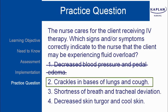Crackles in the bases of lungs and cough is correct. Pulmonary symptoms of fluid volume overload include crackles, shortness of breath, and frothy sputum. Other symptoms might be distended jugular neck veins and increased blood pressure. Shortness of breath and tracheal deviation are signs and symptoms of a collapsed lung. Decreased skin turgor and cool skin are seen with fluid volume deficit.